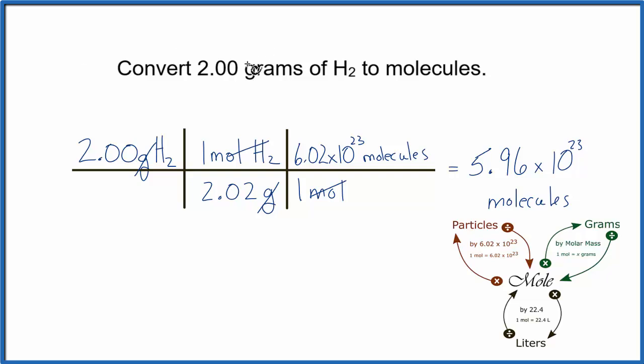So whether you use the mole map to convert from grams to moles to molecules, or you set the conversion factors up, cancel your units, either way, 2.00 grams of H2 is 5.96 times 10 to the 23rd molecules.